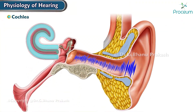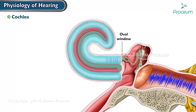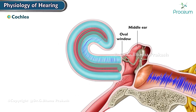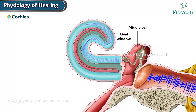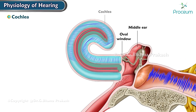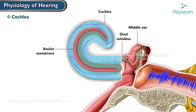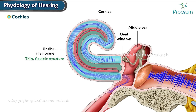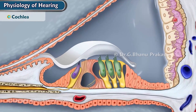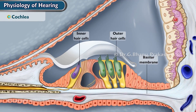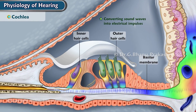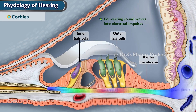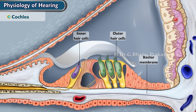Sound waves enter the cochlea through the oval window, a membrane that separates the middle ear from the inner ear. As the sound waves travel through the fluid in the cochlea, they cause the basilar membrane to vibrate. The basilar membrane is a thin, flexible structure that runs the length of the cochlea and contains thousands of tiny hair cells responsible for converting sound waves into electrical impulses. The hair cells are embedded in the tectorial membrane, a gel-like structure that overlies the hair cells.